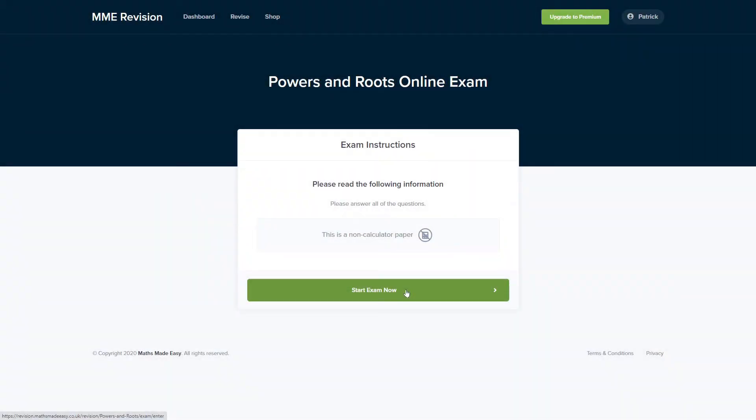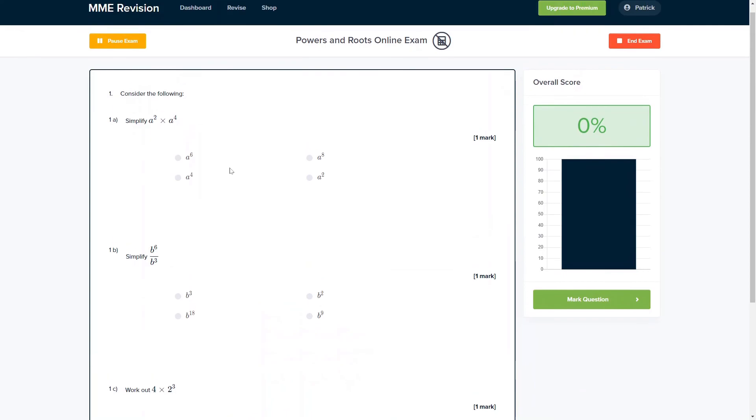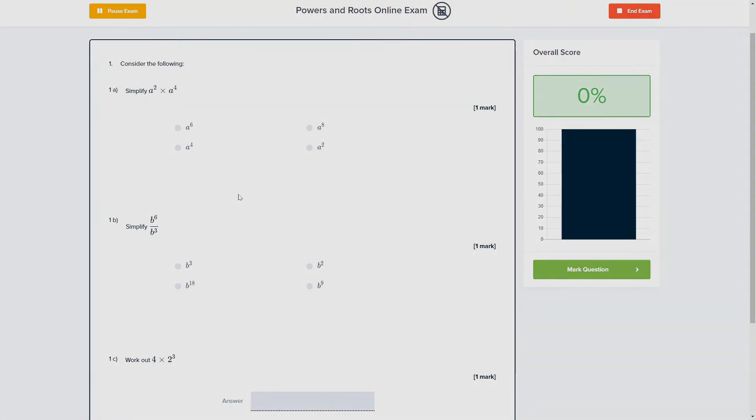If you're feeling good about this topic and you want to practice some exam-style questions, you can do so with our online exam. This is available through our revision platform. If you take the test you'll find loads of different questions to have a go at, all of which are instantly marked so you can keep track of where you're going wrong and where you can improve for your exam. If you're interested, you can click the link below and it will take you straight there.